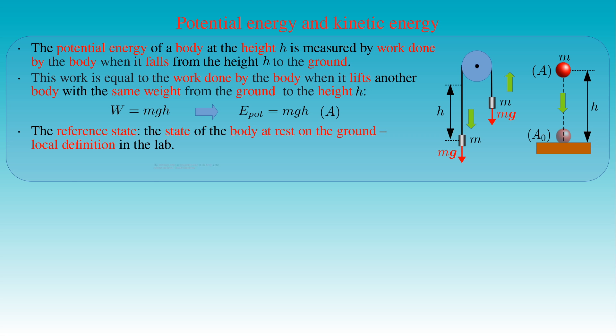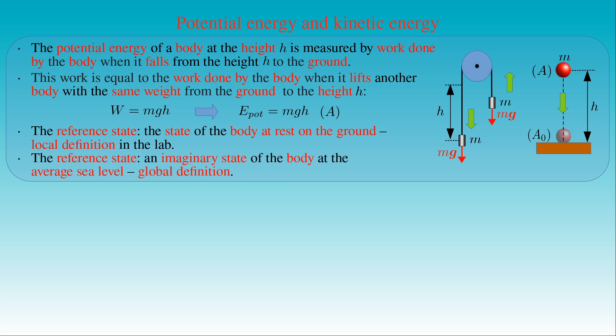In the general case, the reference state of a body can be chosen as the state of the body at the average sea level of Earth. Here no reference to the local surface level of the ground is applied, and this choice provides a global definition of potential energy.